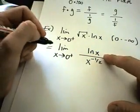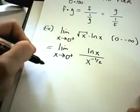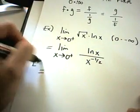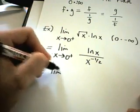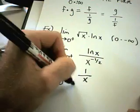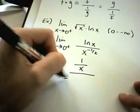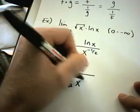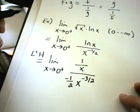And you can convince yourself this is now going to be of the form infinity over infinity. So I'll use L'Hopital's rule. The derivative of ln of x is 1 over x. In the denominator, I'll get negative 1 half x to the negative 3 halves.